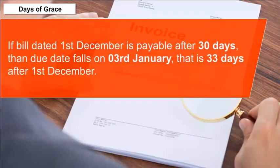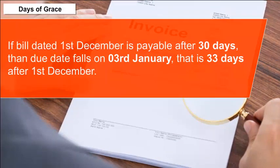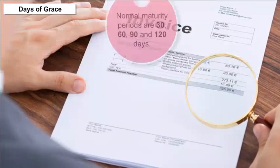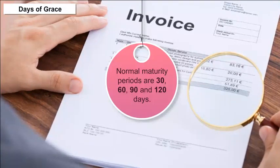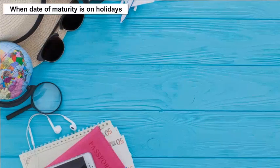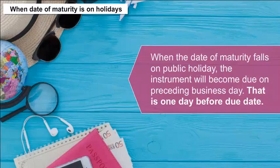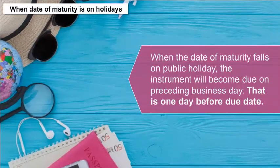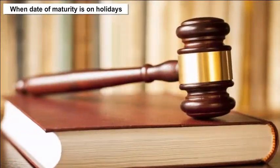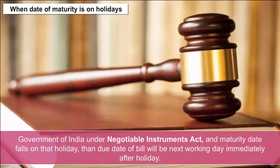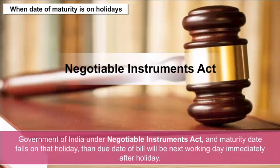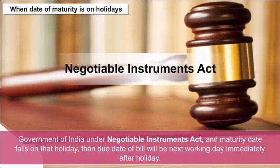Example: If a bill dated 1st December is payable after 30 days, the due date falls on 3rd January — that is 33 days after 1st December. Normal maturity periods are 30, 60, 90, and 120 days. When the maturity date falls on a public holiday, the instrument becomes due on the preceding business day. However, if an emergent holiday is declared by the Government of India under the Negotiable Instruments Act and the maturity date falls on that holiday, the due date will be the next working day immediately after the holiday.